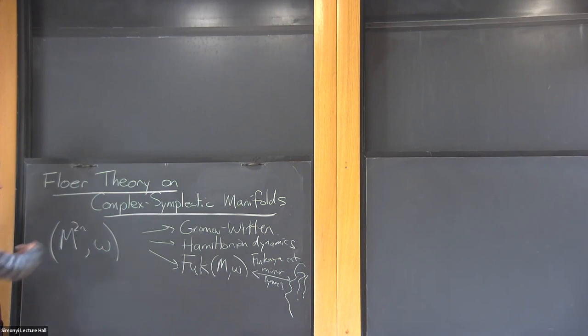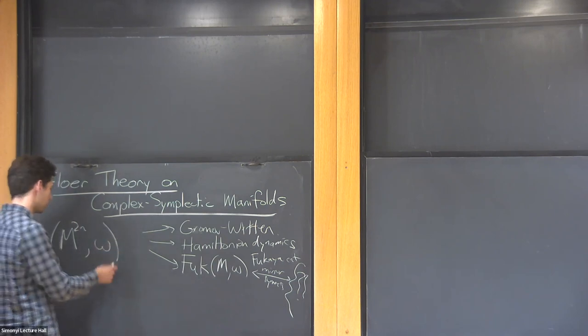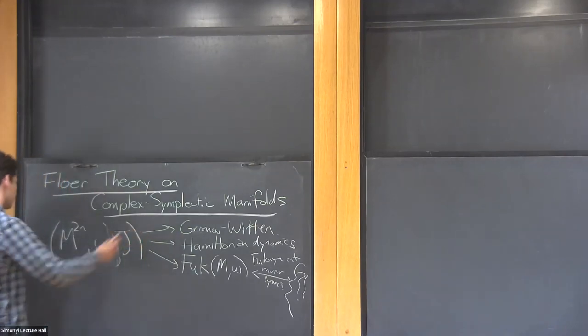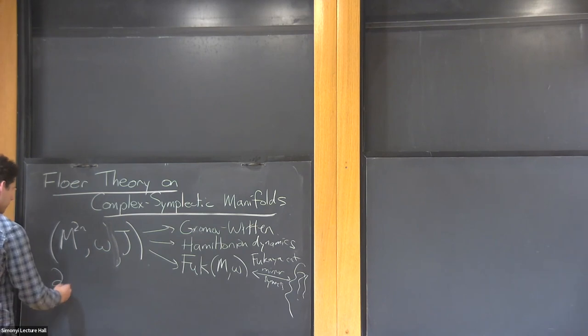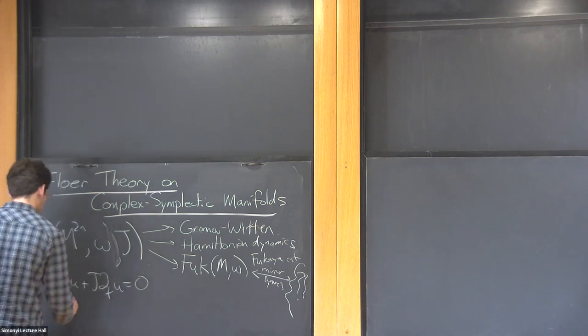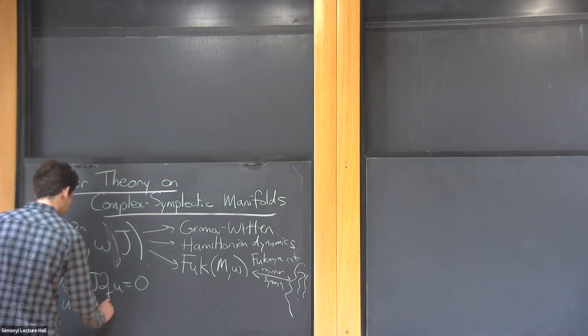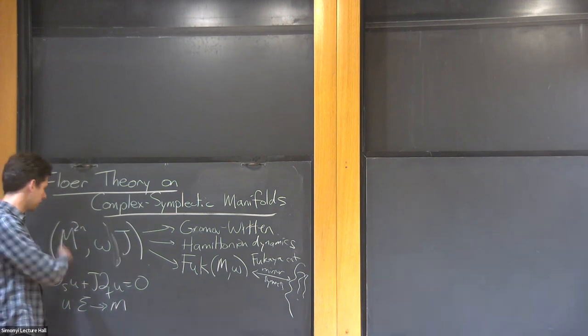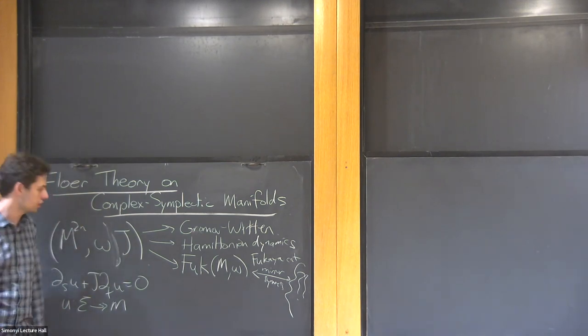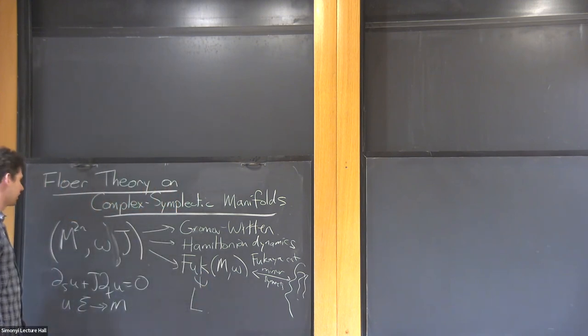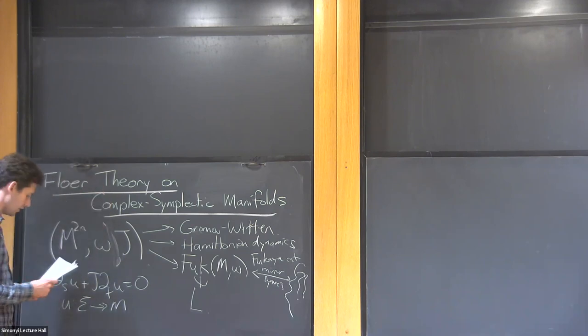Usually to make sense of any of these invariants, you have to pick some auxiliary structures. You have to pick an almost complex structure J, and then there's some sort of preferred partial differential equation, which is basically the non-linear Cauchy-Riemann equation for maps from a surface to M and its various perturbations. There's also some kind of distinguished objects like Lagrangians and Legendrians, which are the objects of the Fukaya category.